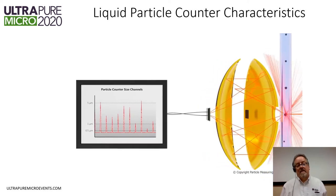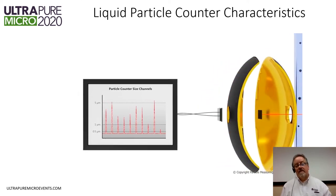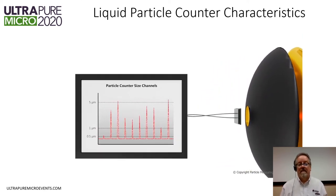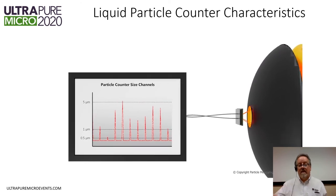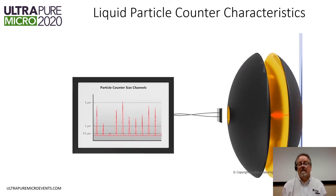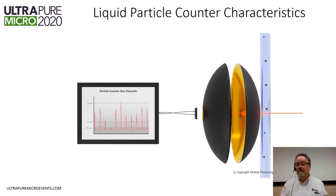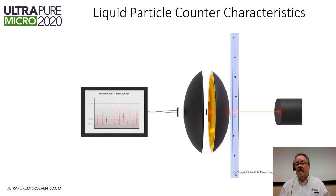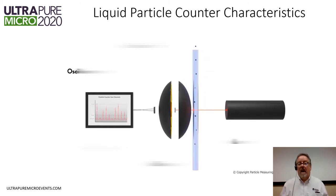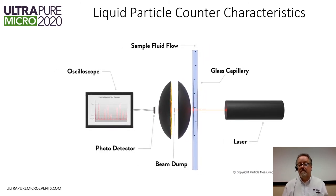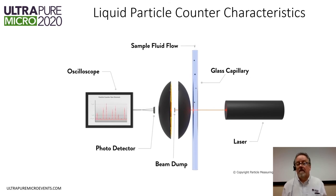We can look at that over here on the left, where the signal in millivolts equivalent is on the vertical scale. Every time a particle passes through, it creates a spike in signal, and we can bin those by particle size — we know how many particles in each size pass through the laser beam. These are typical of any liquid particle counter.